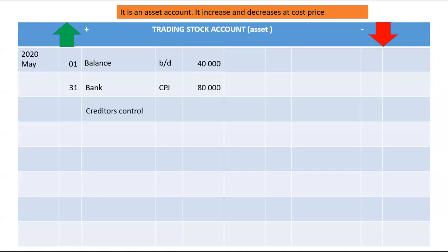If you purchase trading stock on credit, this will be recorded in the Creditors Journal. The two accounts affected are: debit trading stock with the cost price, and credit Creditors Control. Additionally, if you purchase trading stock using small amounts of cash, you will debit trading stock with petty cash — recorded in the Petty Cash Journal (PCJ) — and the amount will be 520.